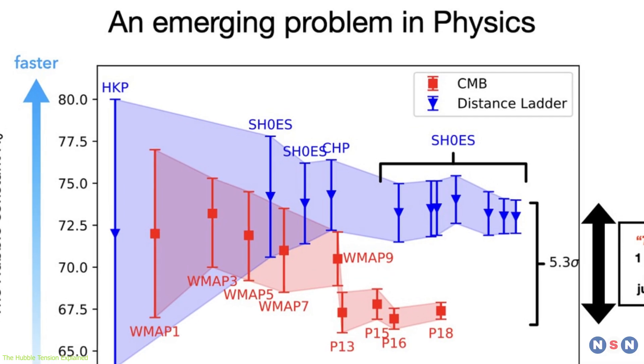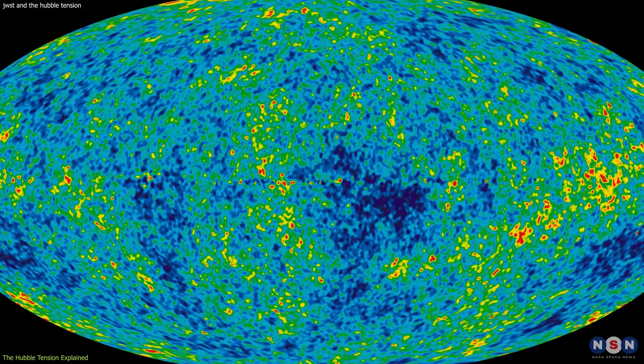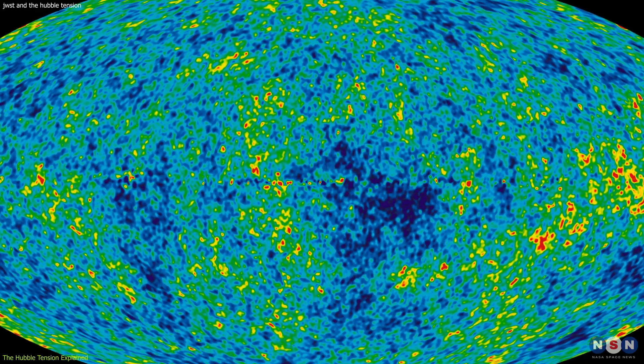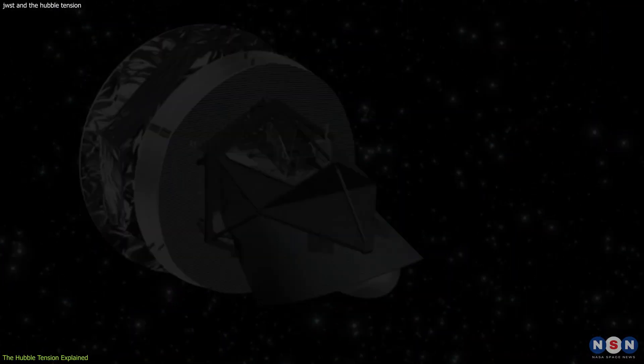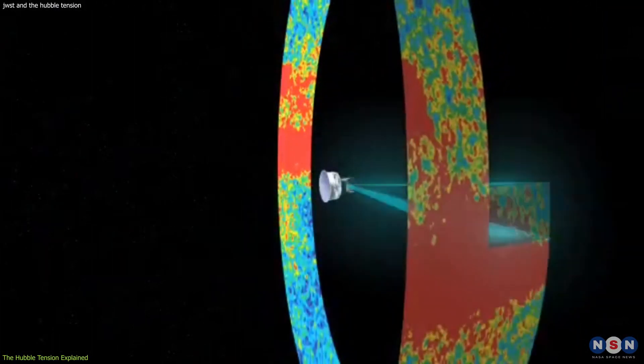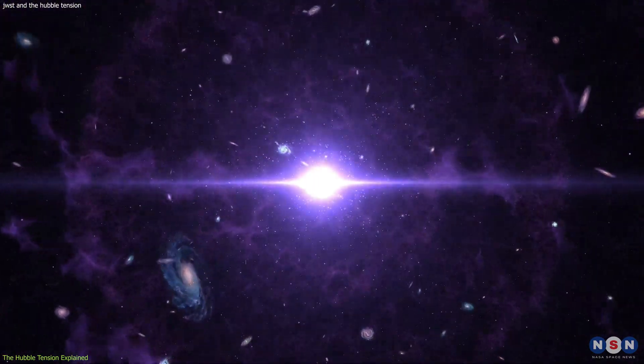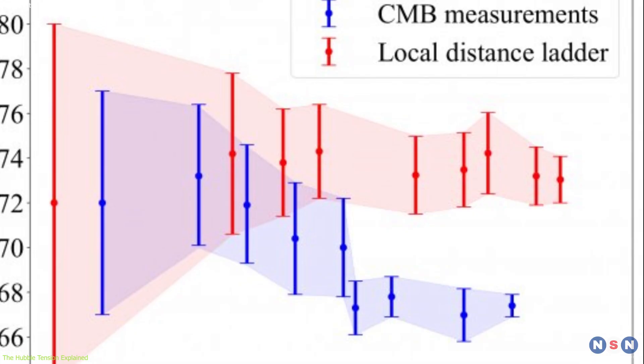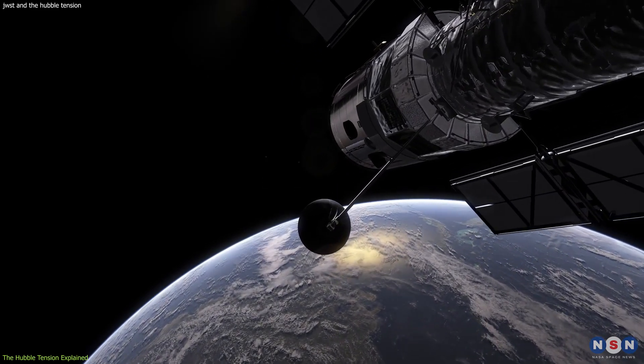However, the Hubble Tension arises when comparing these direct measurements with the predictions made by the cosmic microwave background radiation, the afterglow of the Big Bang. The Planck satellite, which observed this radiation with unprecedented precision, provided a different estimate of the expansion rate based on the early universe's conditions. This estimate is significantly lower than the rate measured by Hubble, leading to the tension that has intrigued and challenged astronomers.